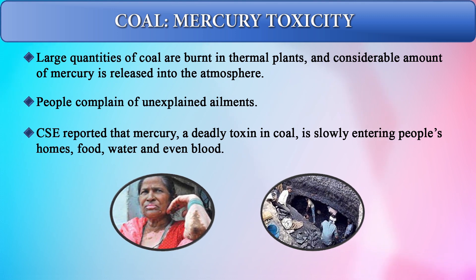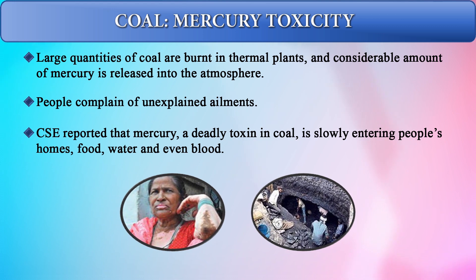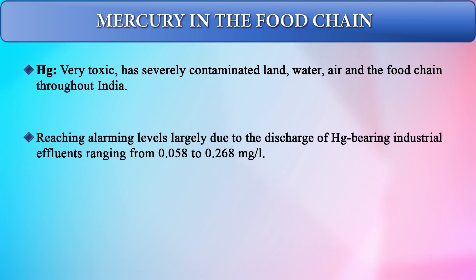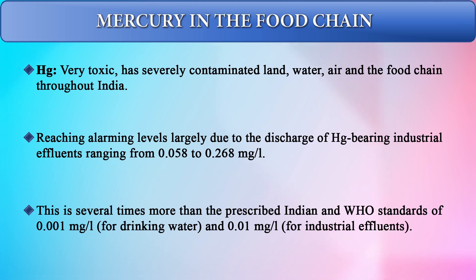The Centre for Science and Environment has reported that mercury, a deadly toxin in coal, is slowly entering people's homes, food, water, and blood. When blood was analyzed by different agencies, mercury levels were found to exceed permissible limits. Mercury has severely contaminated land, water, air, and the food chain throughout India, reaching alarming levels. Industrial effluent mercury discharge ranges from 0.058 to 0.68 mg/L — several times more than the prescribed Indian and WHO standards of 0.001 mg/L for drinking water and 0.01 mg/L for industrial effluents. Even the hair and nails of residents contained mercury in alarming concentrations.